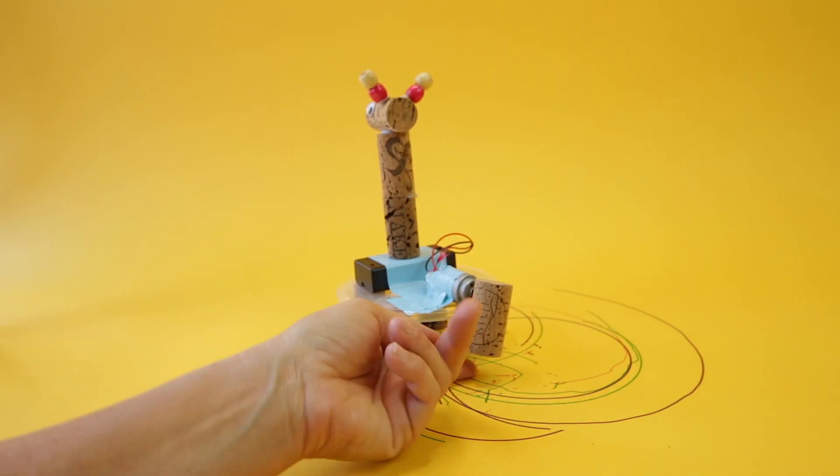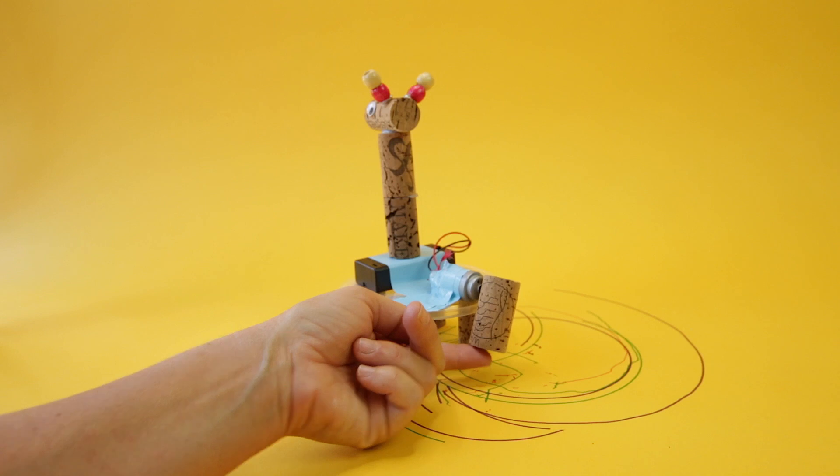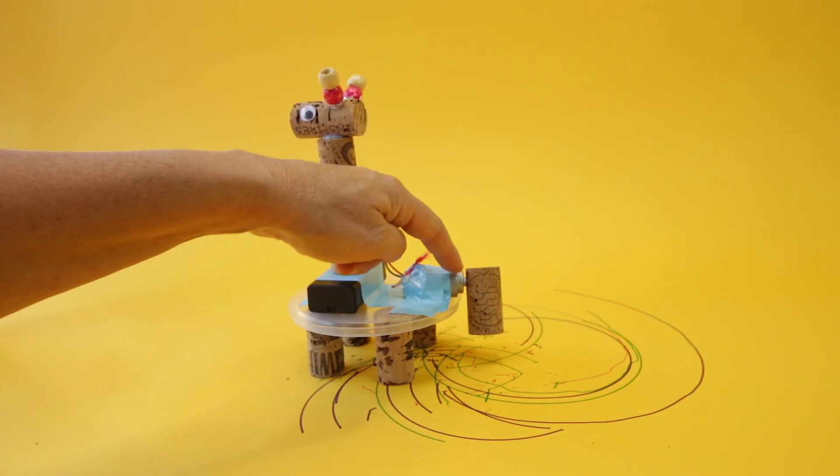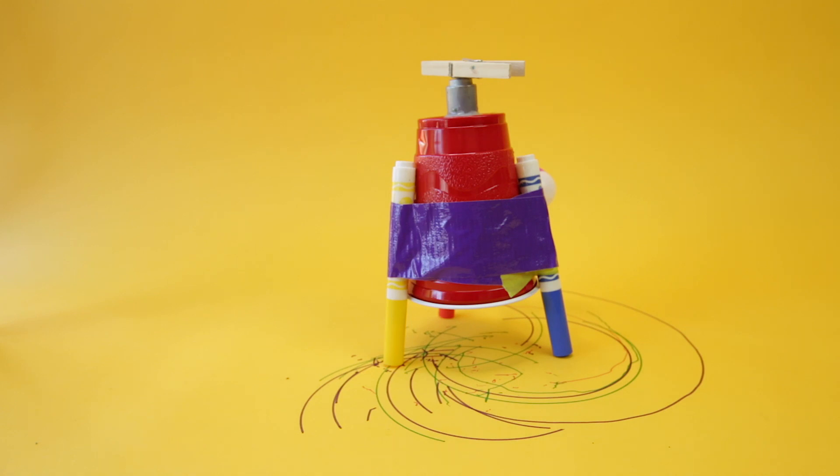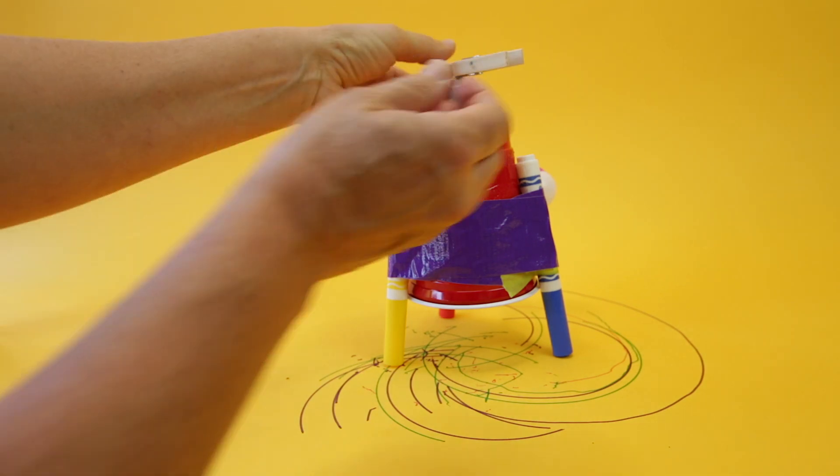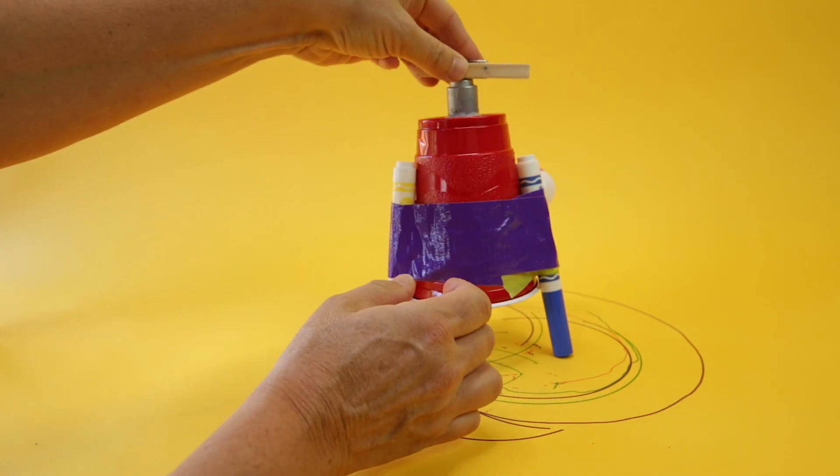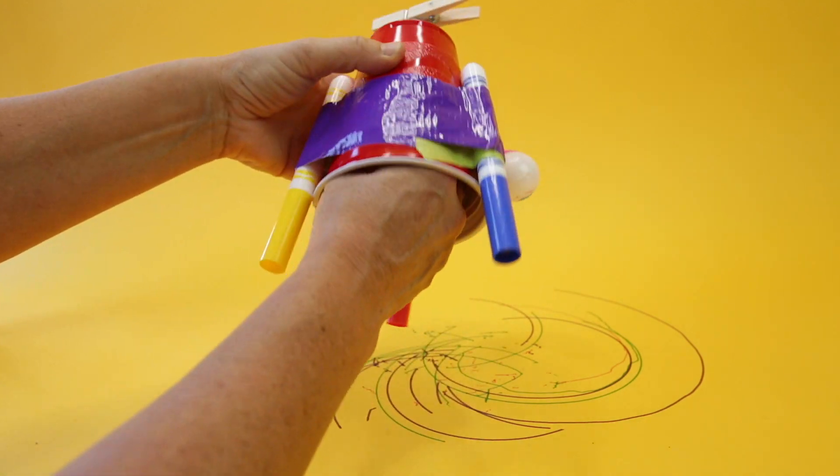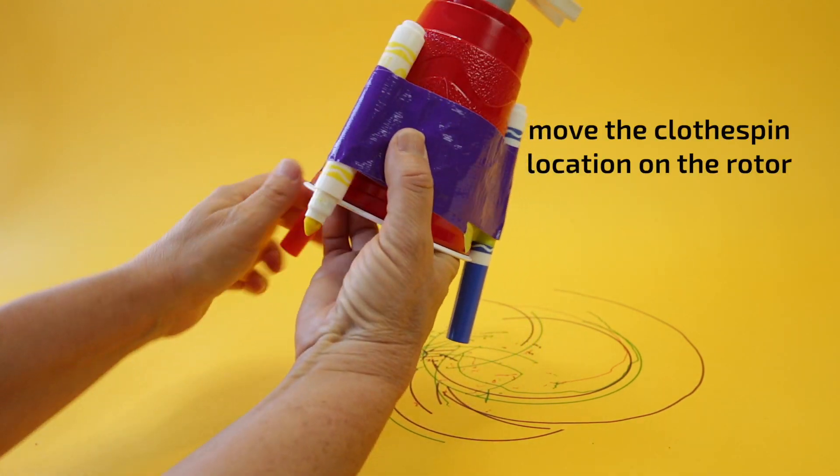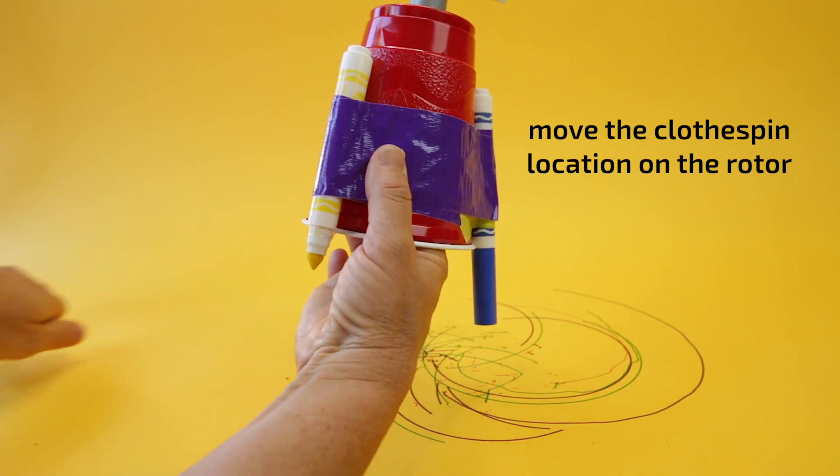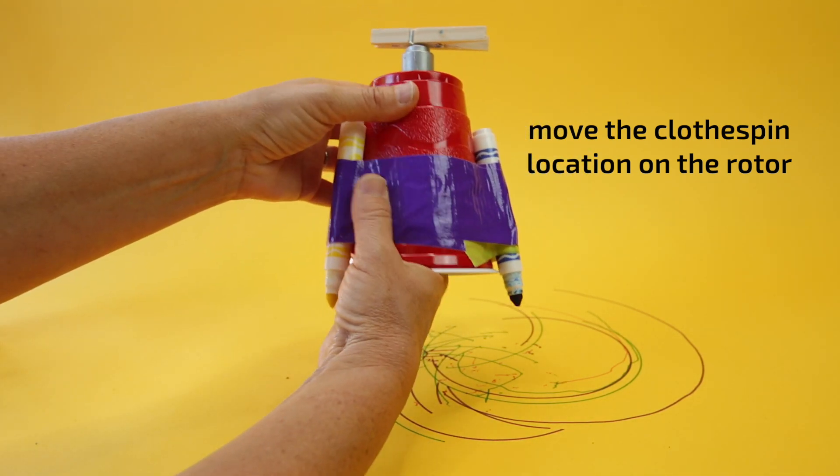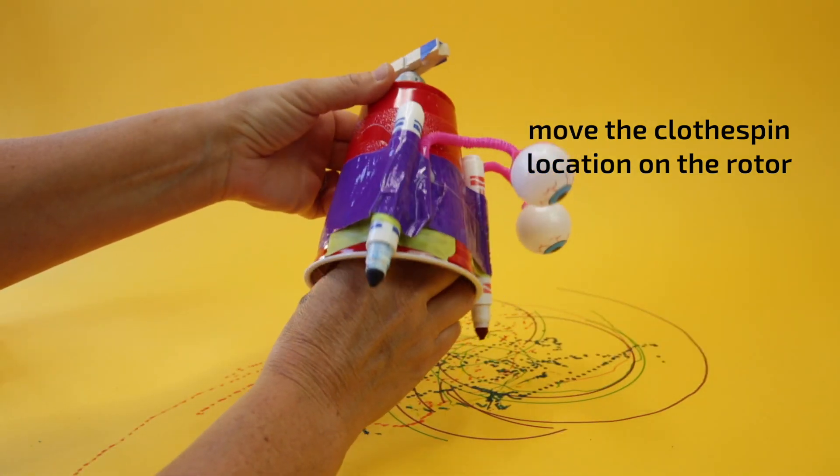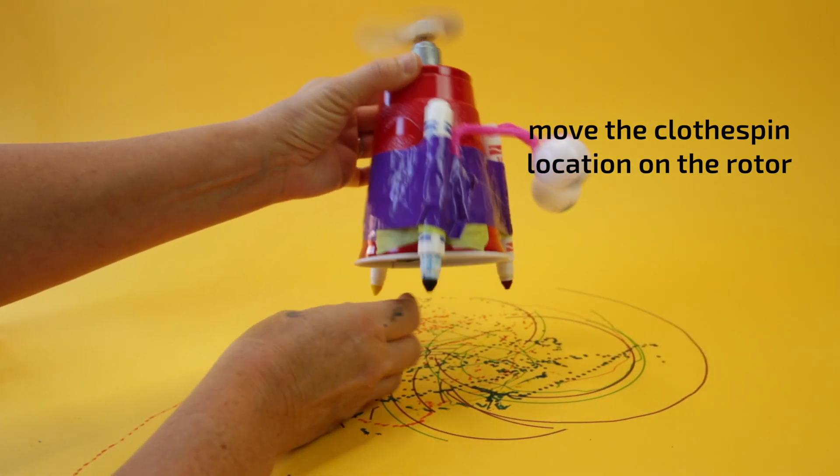Alright, so that's one of the things you can check next. Change the location of the rotating element in relation to the rotor. This is especially true on the cup marker bot because it's very tempting to put this if you're using a clothespin to put it very symmetrically placed on top. The more symmetrical it is the less it will move around because again it's acting more like a propeller and not as an off balance movement.